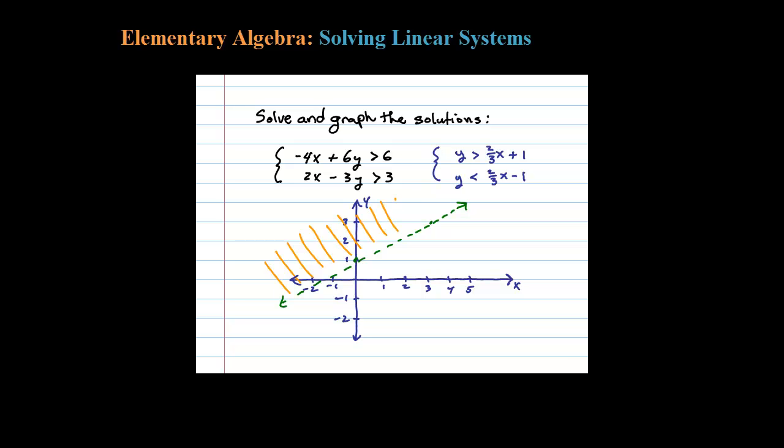Okay, now let's focus on the second inequality, y equals two-thirds x minus one. So minus one is the y-intercept. We'll rise two and run three. Notice it does have the same slope. And again I'm going to draw a dotted line. So those two lines are parallel.